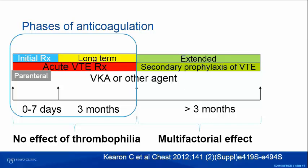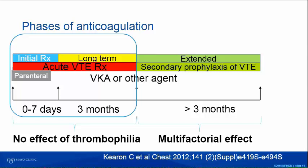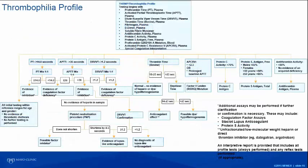It's usually the duration of anticoagulation where you need to decide whether this patient has significant risk factors warranting ongoing anticoagulation. This is a very complex area. There's the science — where management won't change so you don't need to do testing — and then there's the art, where the patient wants to know if they have anything in their genes that puts them at risk. That's a balance we tap-dance around when seeing patients.